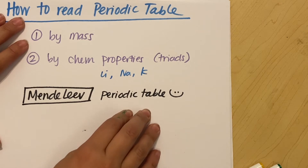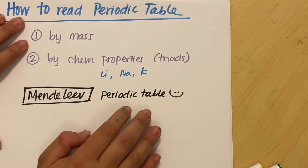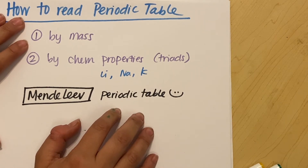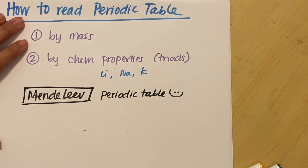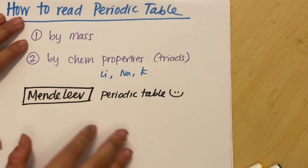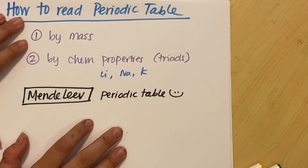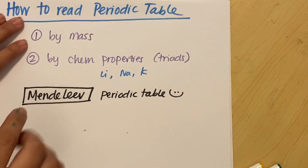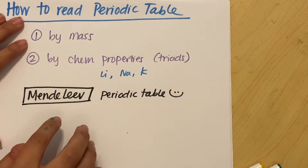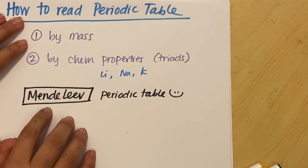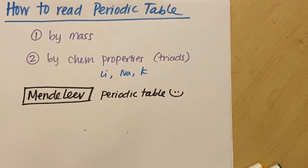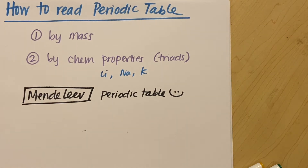We know him in chemistry because he discovered and implemented the periodic table, but he wrote books in chemistry, physics, philosophy, mathematics, geography — you name it. He was just an amazing mind. If you have the time, look him up.